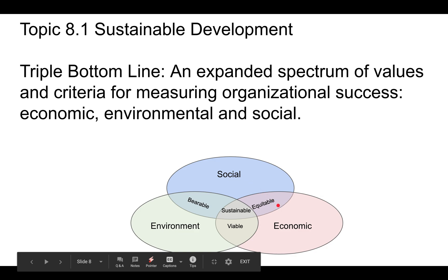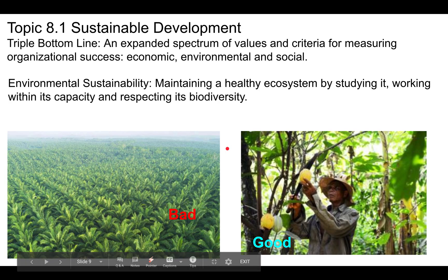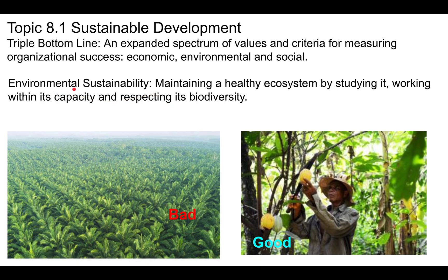We also want economic growth to be equitable — people in all strata of society and all groups within societies should have economic prosperity. The social dimension in relation to economics needs to be equitable. It also needs to be bearable — society has to not overwhelm the environment as it pursues economics. Economics also needs to be viable as far as the environment is concerned, so you're not destroying the environment in the pursuit of economics. When you get all three of these things right, you end up with sustainable development in the middle.